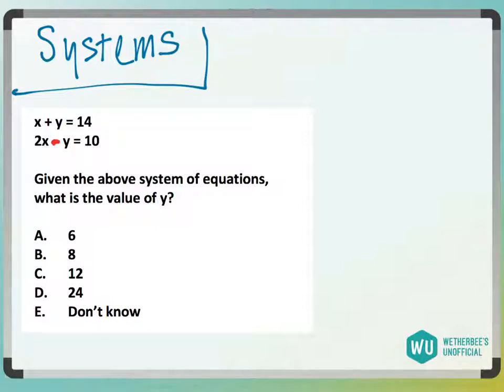Elimination is going to be easier here because I have a plus y and a minus y, and I can immediately cancel those out. Now I'm going to get 2x plus x. So I combine these terms. This is a positive 2x and a positive x, so I get 3x, and that's going to equal, I have a positive 14 and a positive 10, that's going to equal a positive 24.